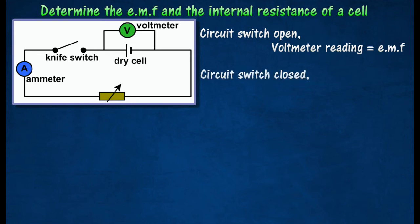The switch is closed and the rheostat is adjusted until the ammeter reaches the minimum value. The ammeter reading and the corresponding voltmeter reading are recorded. By adjusting the rheostat, several sets of readings with increasing current are obtained.